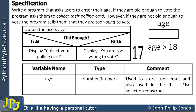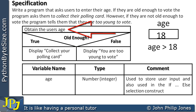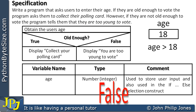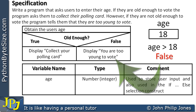When the input is 17, we're asking: is 17 greater than 18? That's false, so we display 'you are too young to vote' — which is correct. Now let's try 18. We enter 18 and ask: is 18 greater than 18? That's also false, which means we would display 'you are too young to vote.' But we've already said that you can vote when you're 18, so having the greater than symbol here is not the correct solution.